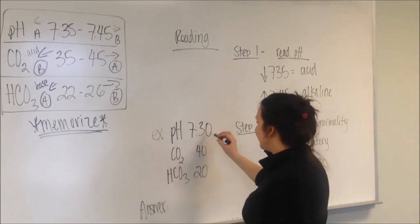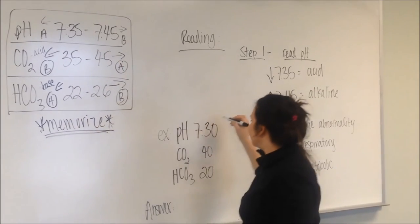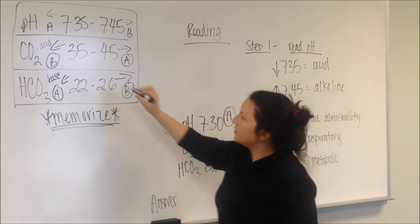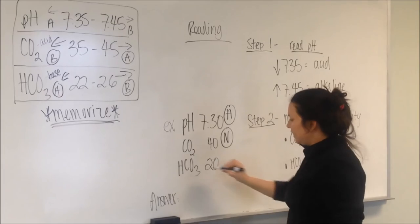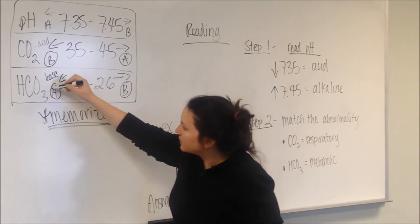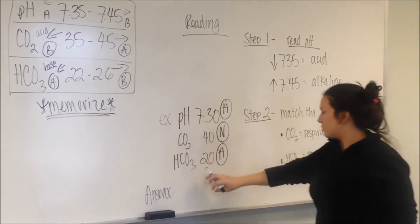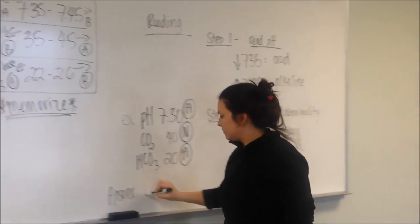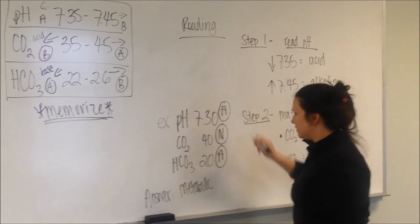Another example, pH 7.30 below, so it's acid. CO2 40, that falls within our normal range, so it's normal. HCO3 20, so it's below, so it's acid. Because it's from our kidneys, it's metabolic acidosis.